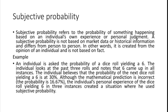Subjective probability can differ from person to person because it is based on the opinion of the individual, not on facts. For example, I might say the probability is 6 and another person might say it is 10, because it's purely our opinions and not based on any factual data.